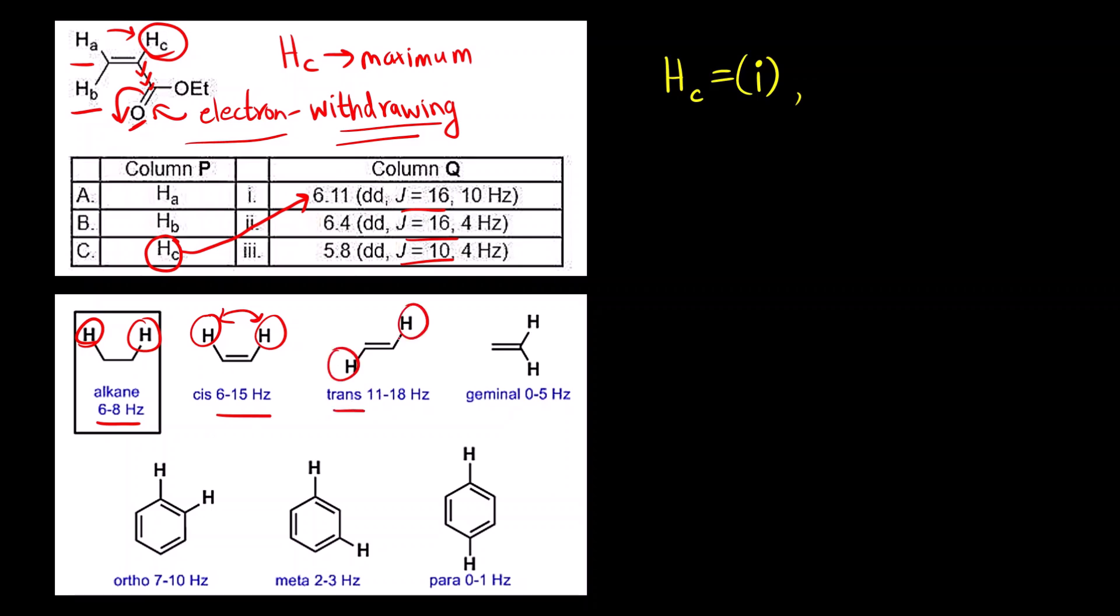For trans, it is 11 to 18. Then both the hydrogens present on the same carbon that is called geminal. For geminal protons, it is 0 to 5 hertz. Then ortho, meta and para also is given. This is very important. You must know these values. So for cis, it is lower 6 to 15.